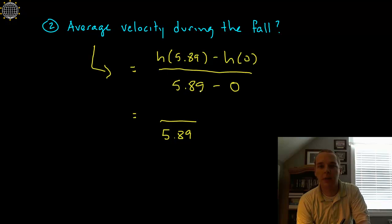Now we just need to evaluate each of these quantities here. The height at 5.89, that's when it hits the ground, that was obviously 0. The height at 0 was 555 feet off the ground, and 5.89 minus 0 is obviously 5.89.